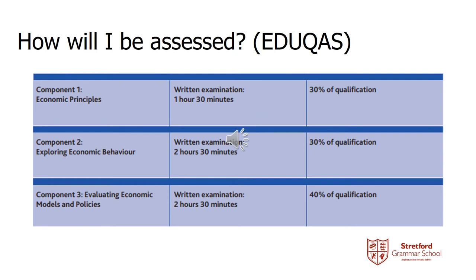The way the course is assessed is through examination. There are three exams at the end of year 13. Component one is economic principles and that's a written exam with shorter questions. Component two is exploring economic behaviour — a two-and-a-half hour exam where you're given some case studies to interpret and analyse.